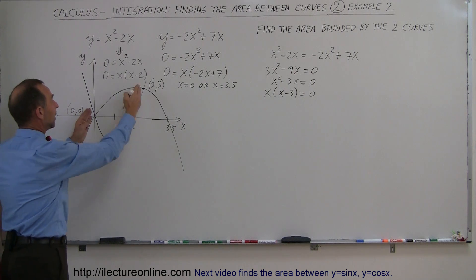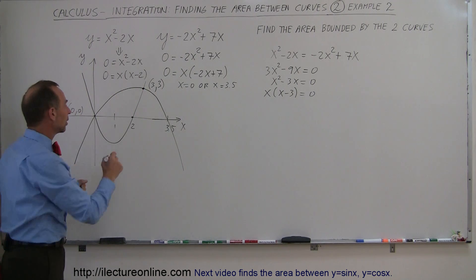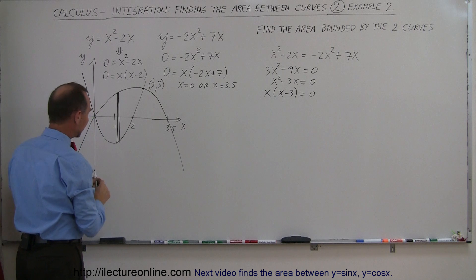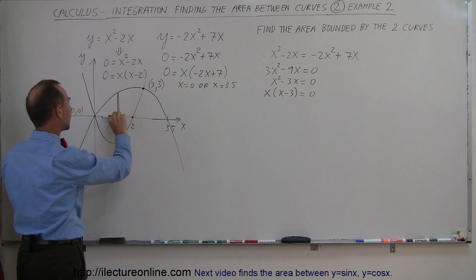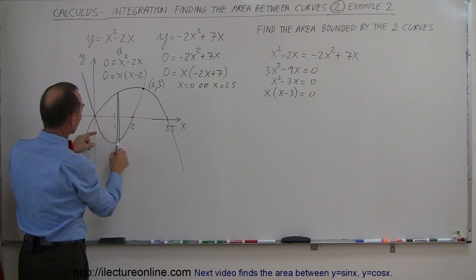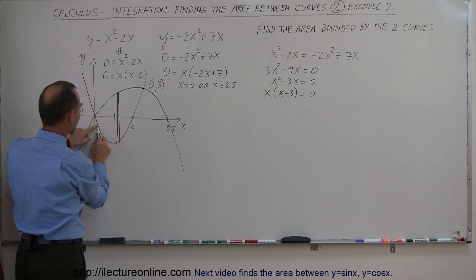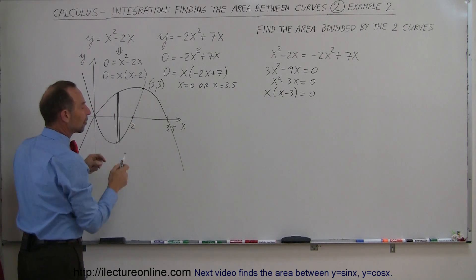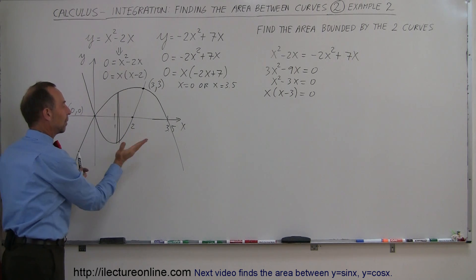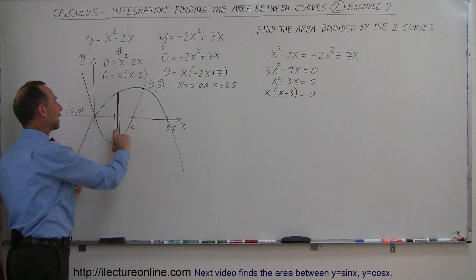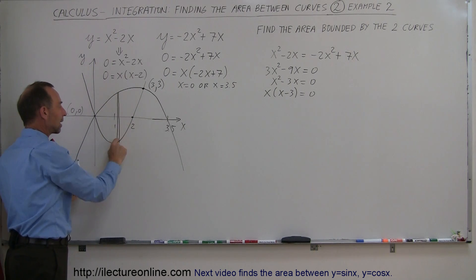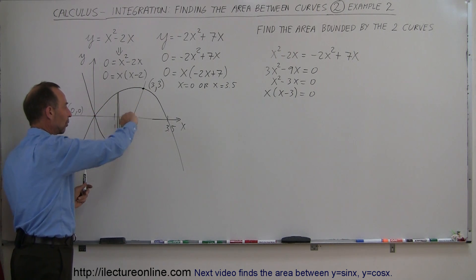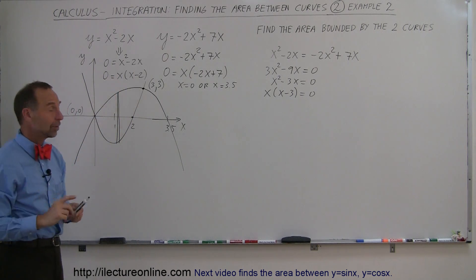Now I have my limits of integration and can set up a small area element. I'll draw the area element vertically. If I drew it horizontally, in some regions I'd go from one curve to the same curve, and in other regions between two different curves — requiring multiple integrals. With a vertical element, the top and bottom always correspond to the same two curves throughout, so it's better to draw the area element vertically.